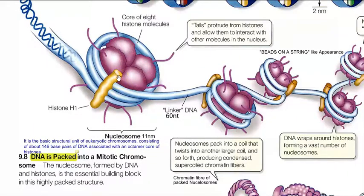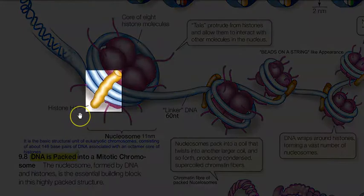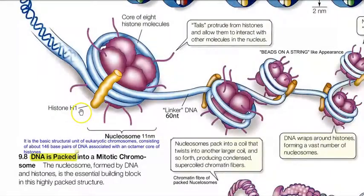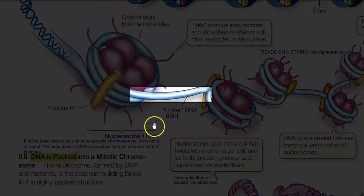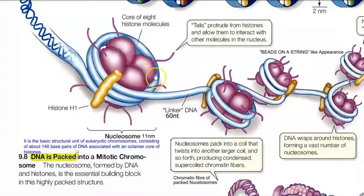The whole structure is sealed with the help of a different histone — histone H1 — which is the least conserved form of histone. A linker DNA connects adjacent nucleosomes; this linker DNA is made up of 60 base pairs and connects two adjacent nucleosomes.